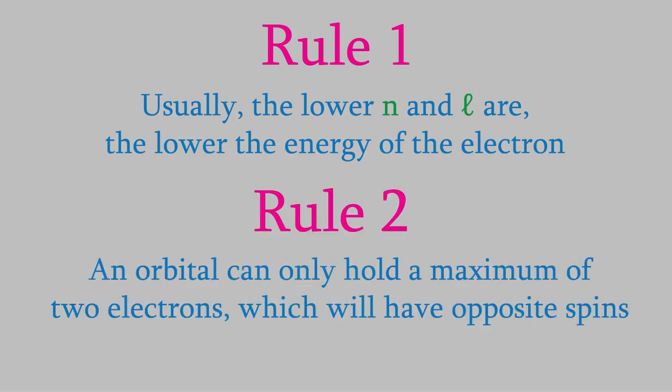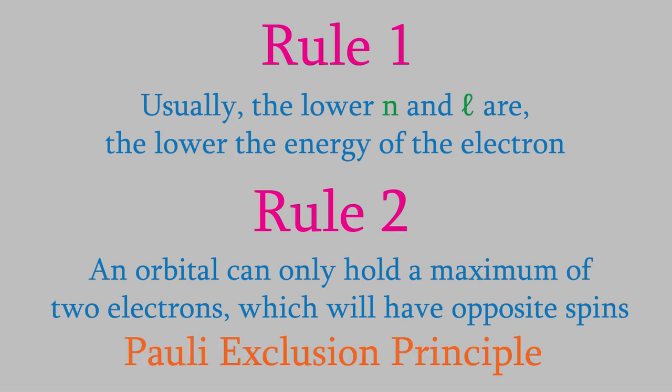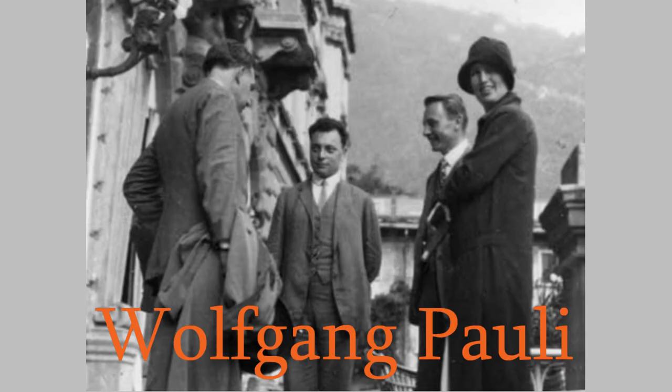Second, each orbital can only hold a maximum of two electrons, and these will have spins of plus and minus one half. If there's only one electron in an orbital, it can have either spin. This idea — that an orbital can only hold a maximum of two electrons and these have opposite spins — is called the Pauli exclusion principle, named after the Austrian physicist Wolfgang Pauli.